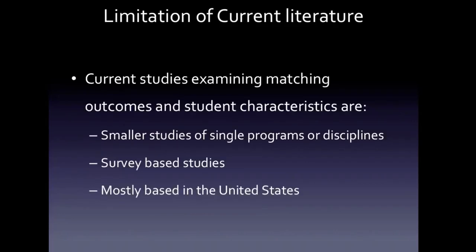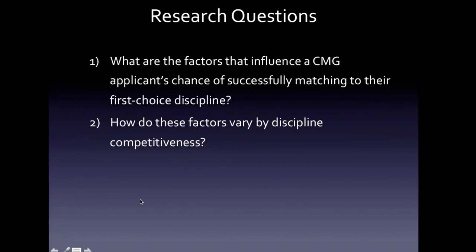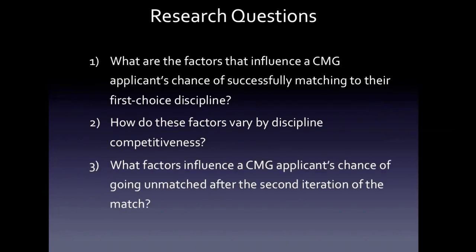The current literature on matching outcomes and student characteristics is generally based on small studies looking at single programs or single disciplines, often survey-based and mostly from the United States. There was a need for more Canadian-focused, broad studies linking matching outcomes to student characteristics. My research questions were: what factors influence a Canadian medical graduate applicant's chance of successfully matching to their first-choice discipline? How do these factors vary by discipline competitiveness? And what factors influence a Canadian medical graduate's chance of going unmatched after the second iteration of the match?